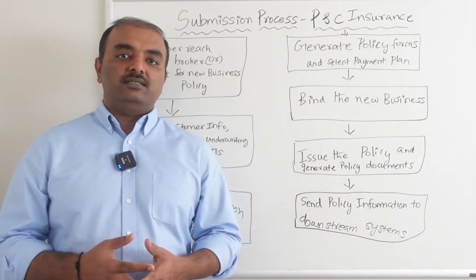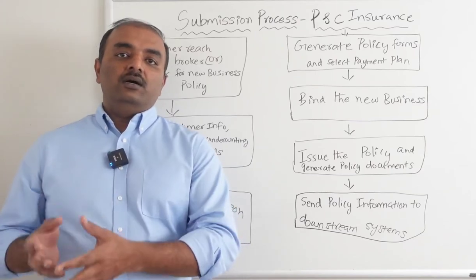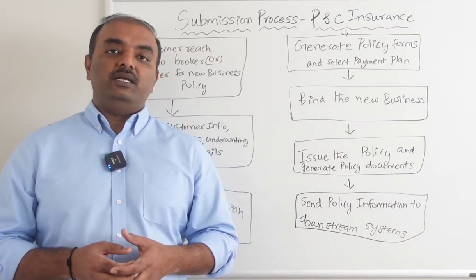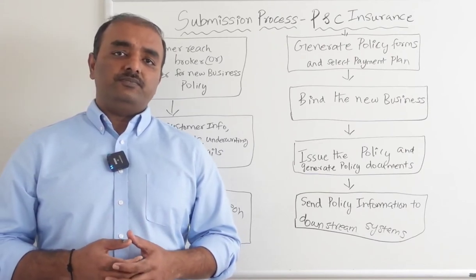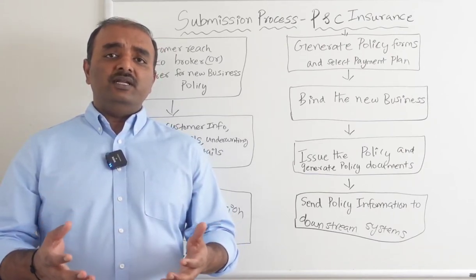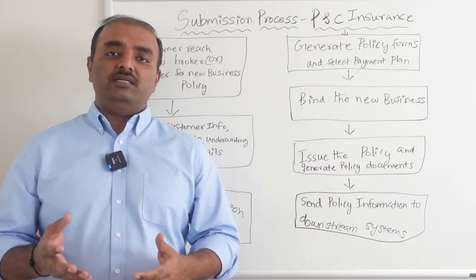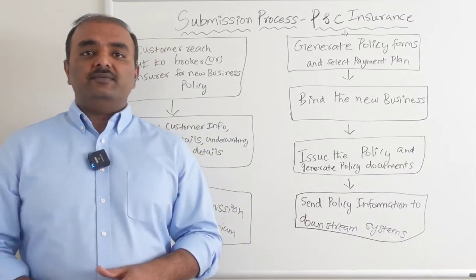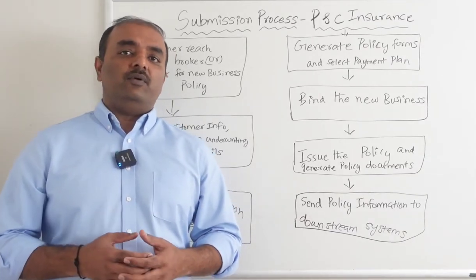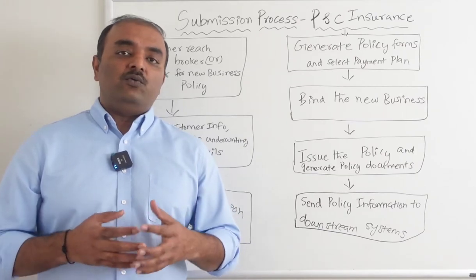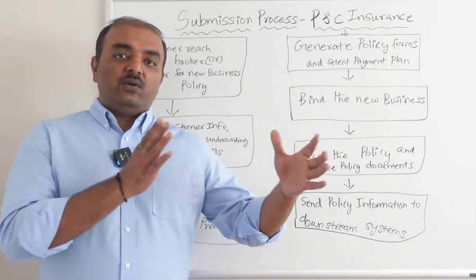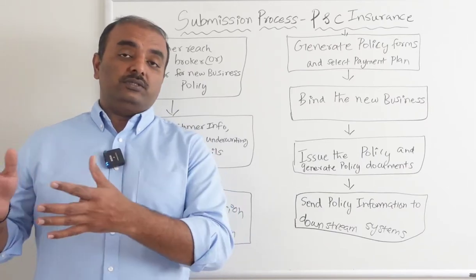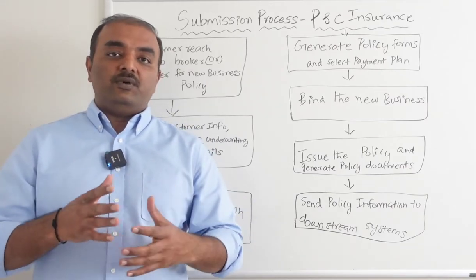Coverage details — for example, if you take workers' compensation, how many employees the company has. Or if they need a property policy, commercial property, what are their locations? Or if they need commercial auto, the number of vehicles, and so on. For underwriting details like commercial property, what is the distance between their location and the seacoast, so that they can price the policy accordingly.